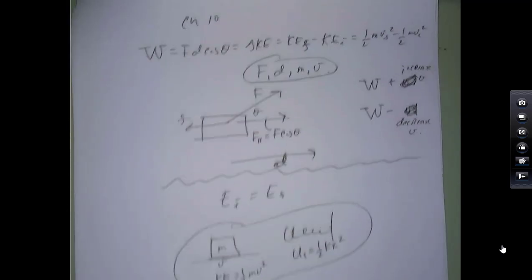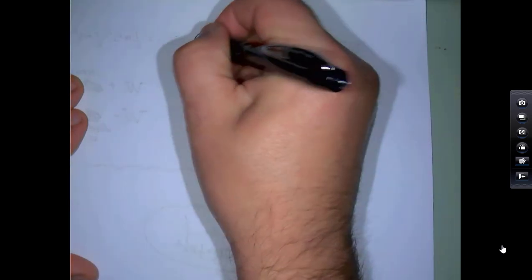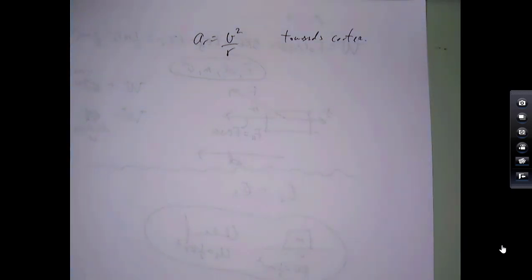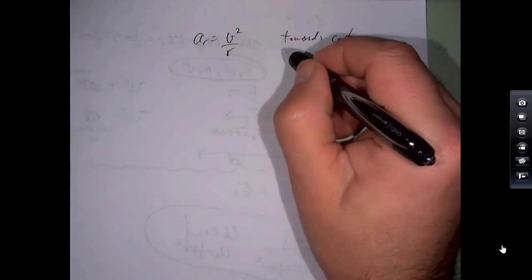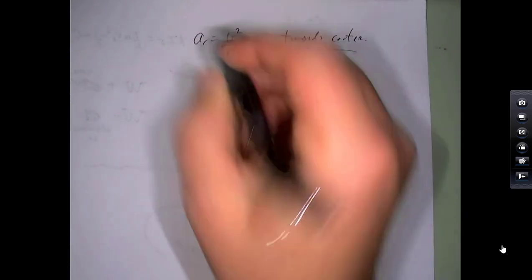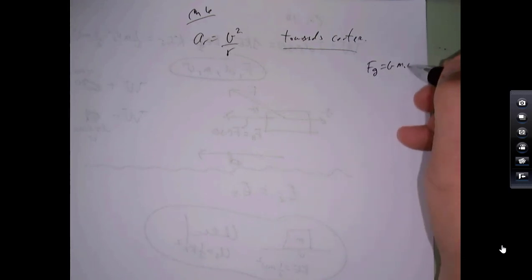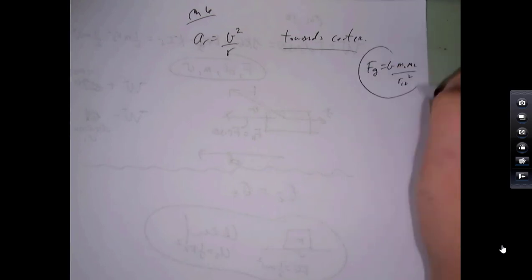After chapter 10 we went back to chapter 6: circular motion. If you're going in a circle, there's an acceleration toward the center along the radius: a_c = v²/r. There always has to be a net force toward the center. I did not put Newton's universal gravitational force formula on the final, so you don't have to worry about that.